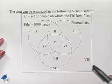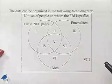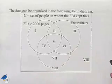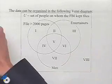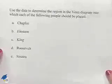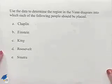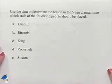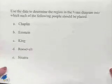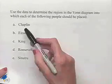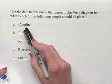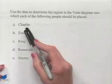The question is to try to determine the region in the Venn diagram into which each of the following people should be placed. So we're going to go through each of these individually, beginning with Charlie Chaplin.